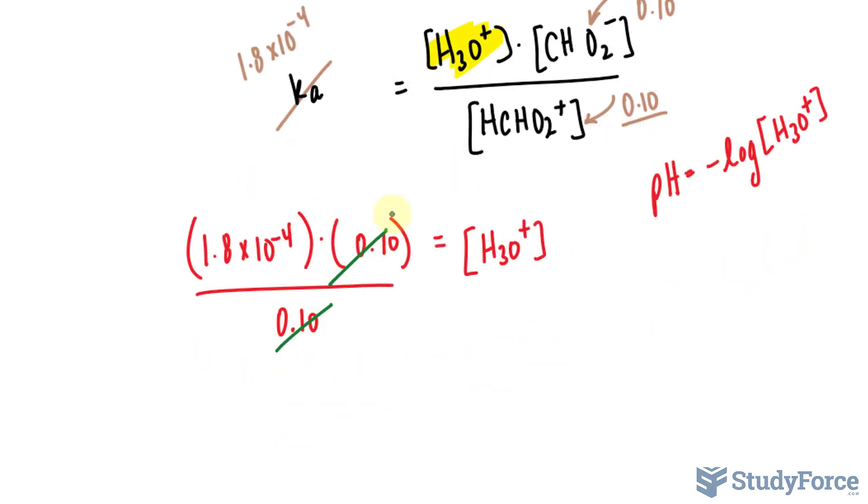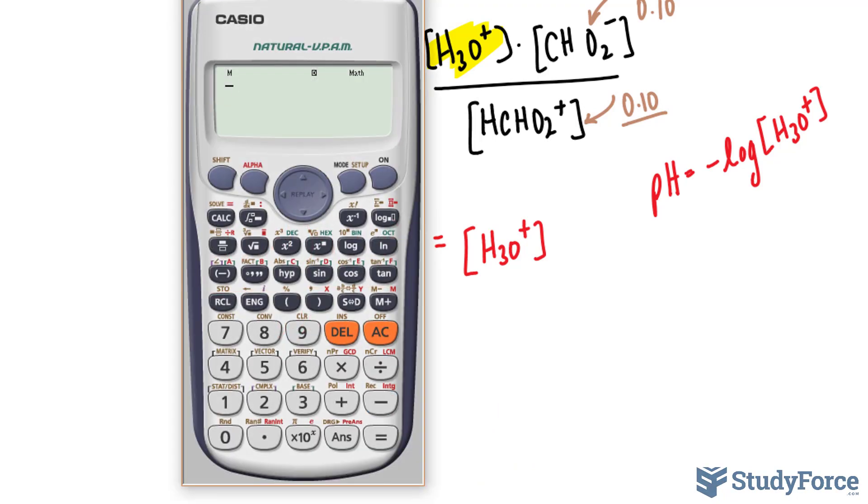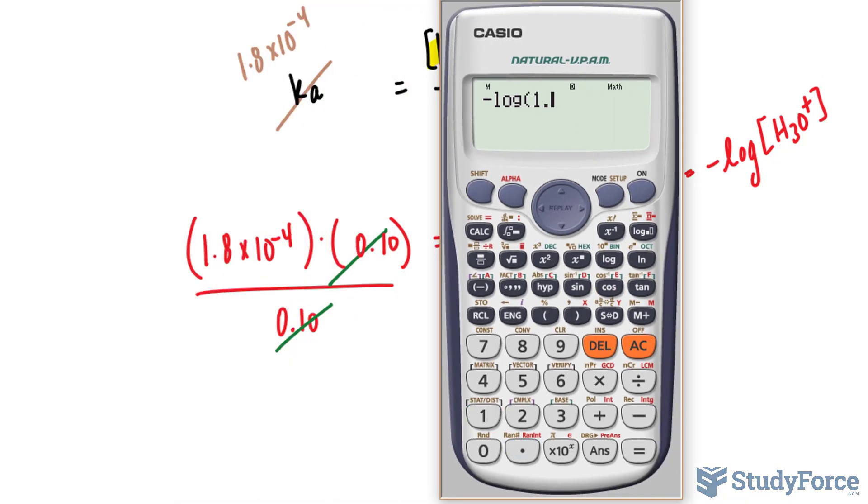This will cancel out with that. And technically, all we have to do is substitute this number right into there. So using our calculator, we have negative log, and that number again was 1.8 times 10 to the power of negative 4. We end up with 3.74.